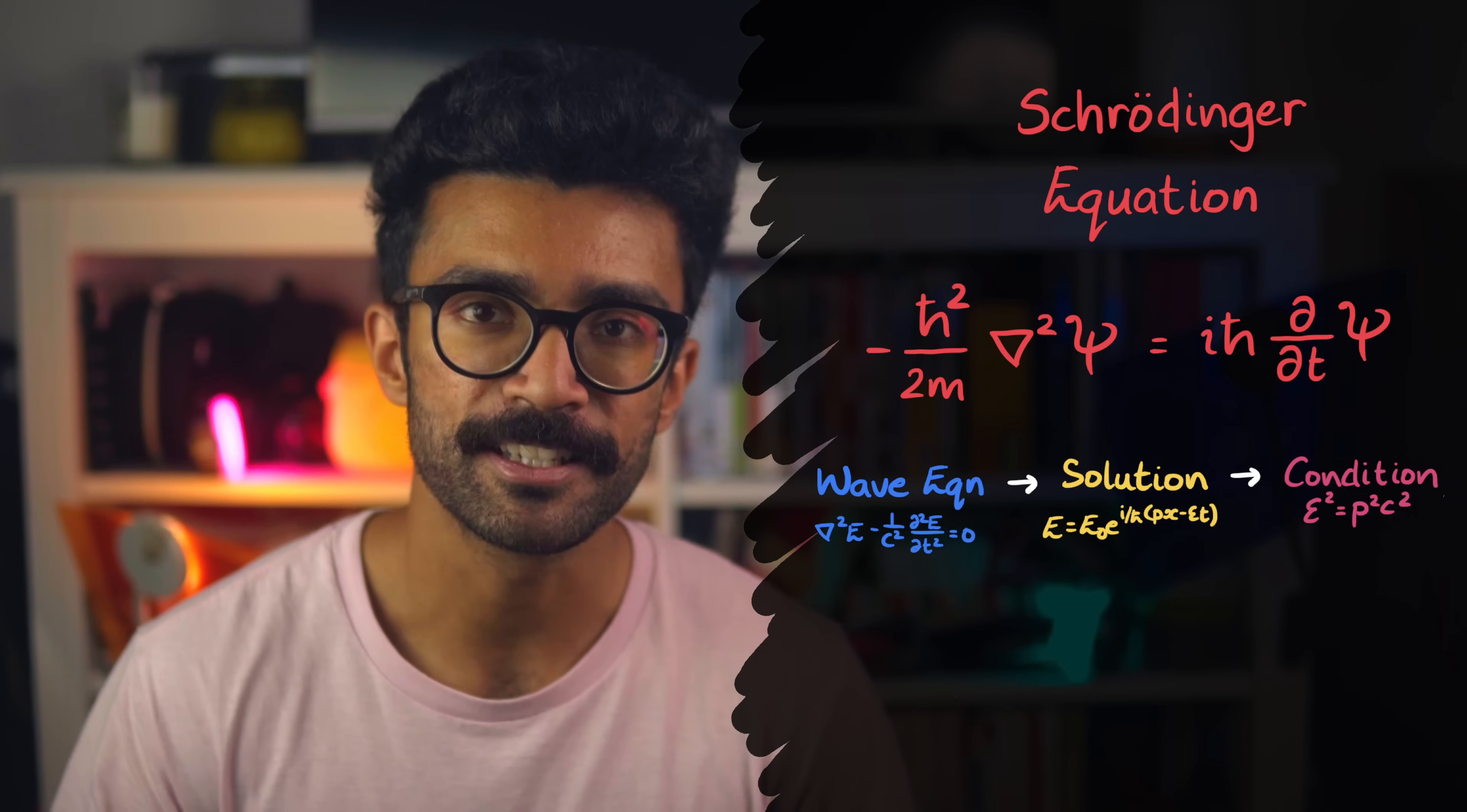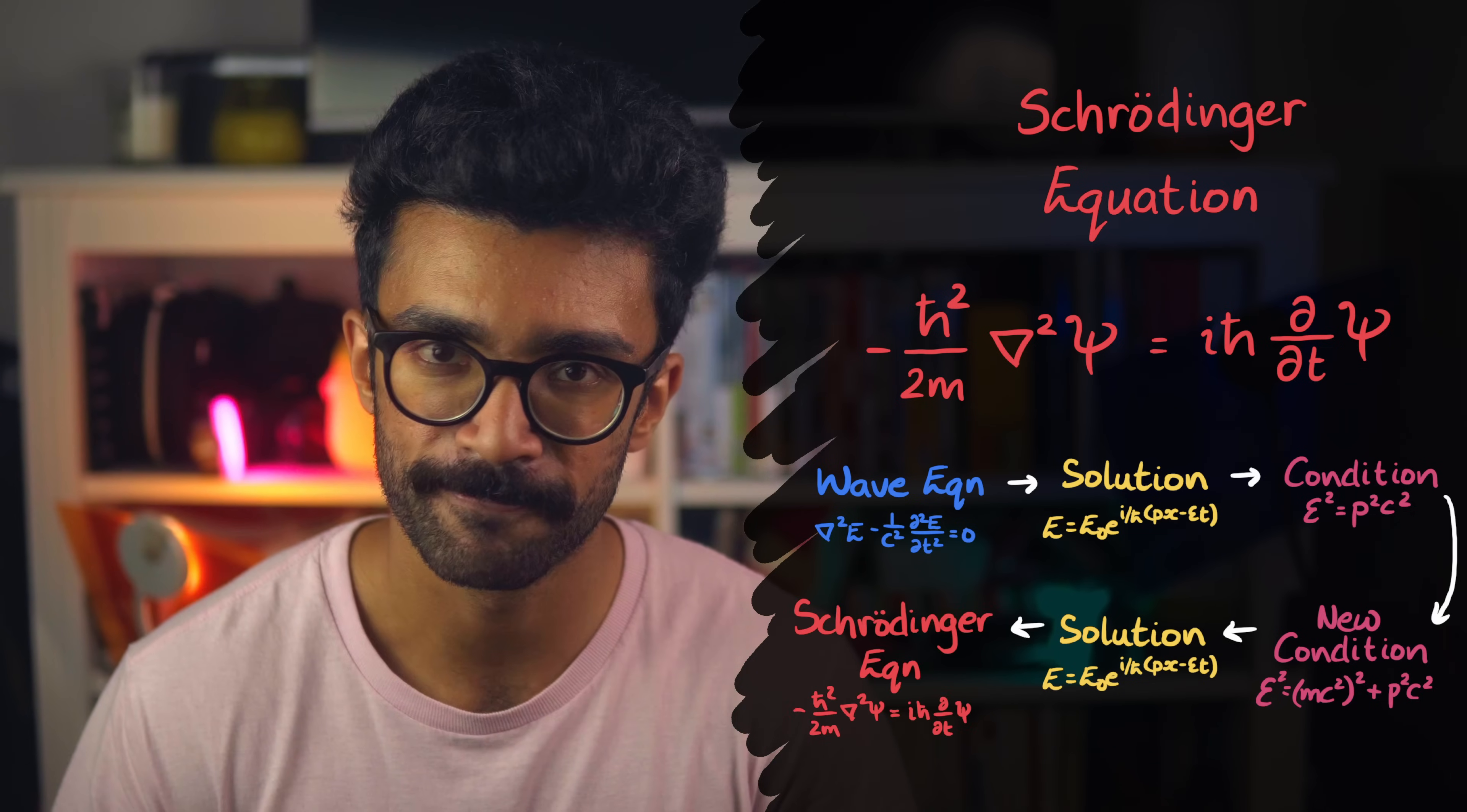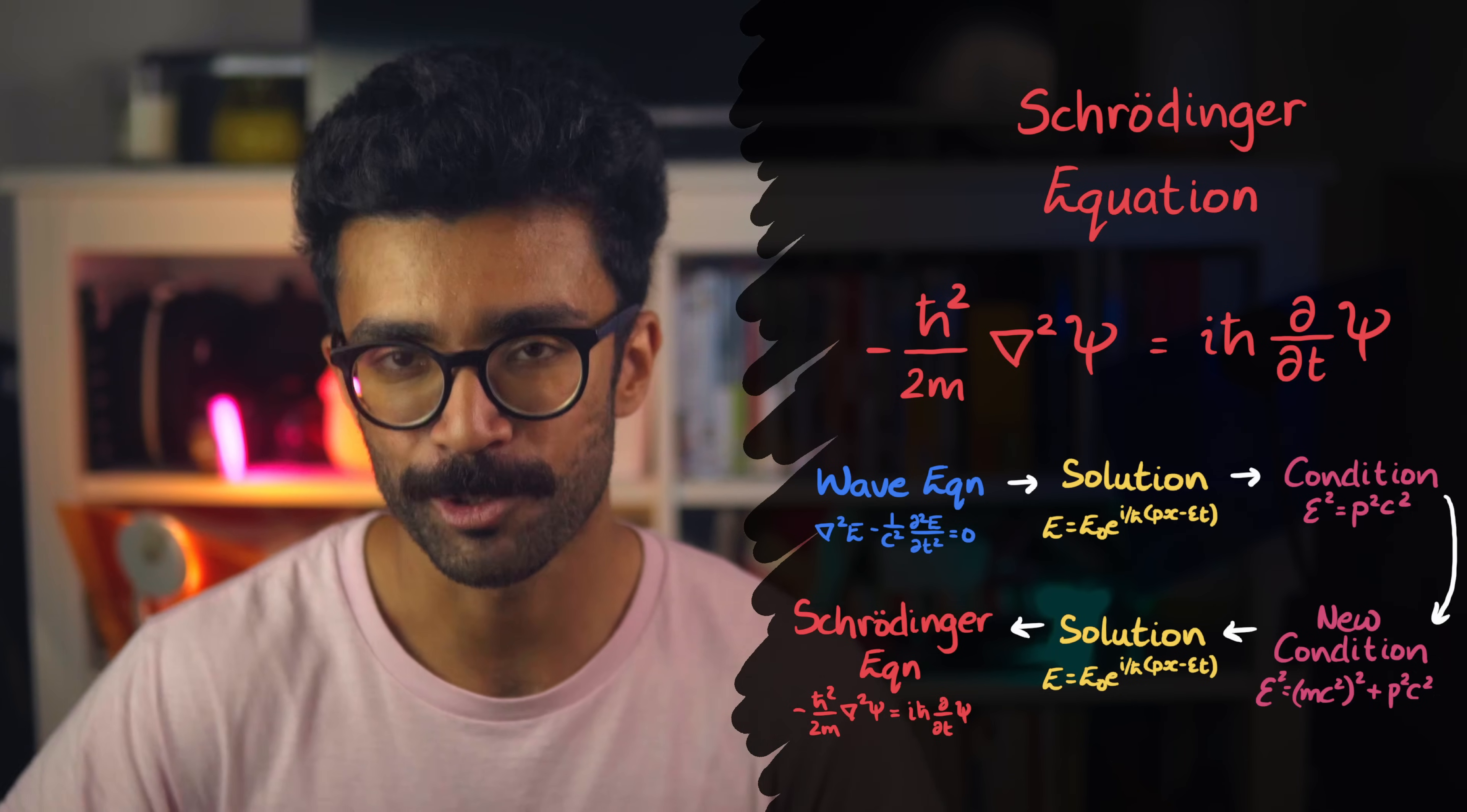Then we realised that this relationship just described how the momentum of photons related to their energy. We instead swapped this with a similar relationship that applied to objects with mass, and worked backwards to a modified wave equation. This new, modified wave equation no longer worked on electromagnetic waves, but rather on wave functions of particles with mass. But since this equation accounted for relativistic effects, we reduced it down to non-relativistic scenarios and ended up with the Schrödinger equation.